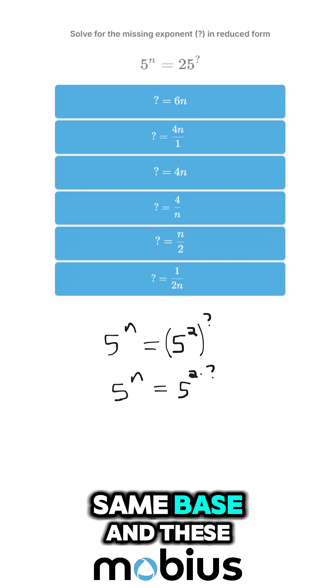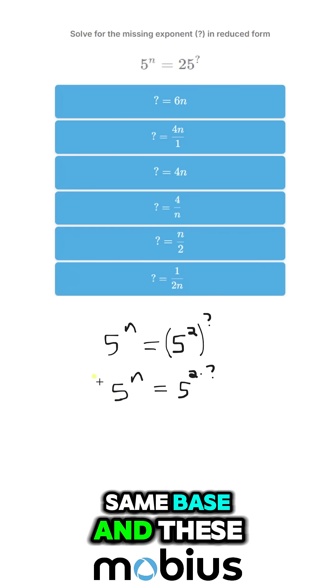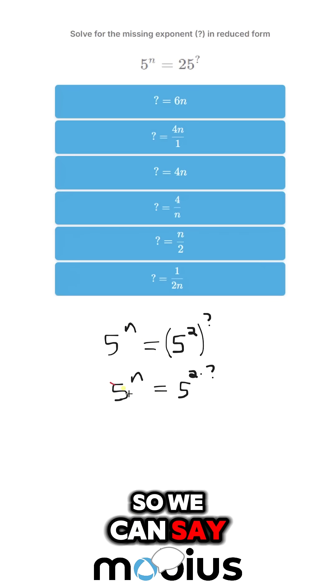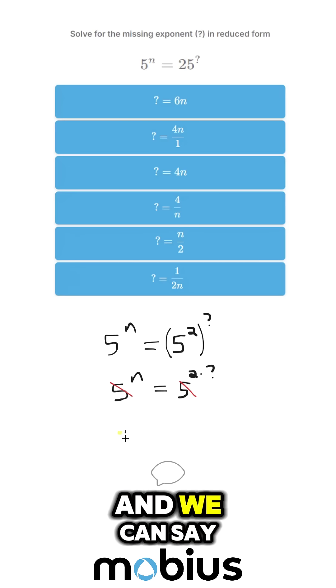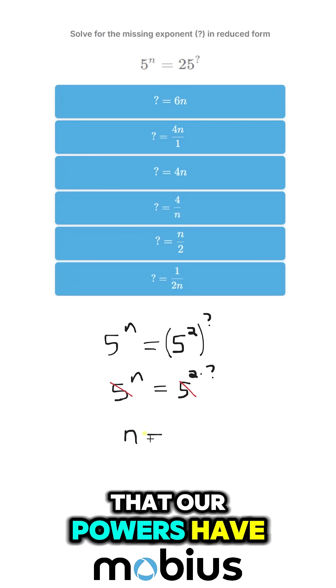Now, we've got the same base, and these are equal, so we can say, instead of using the base, I'm just going to cancel those out. And we can say that our powers have to be the same.